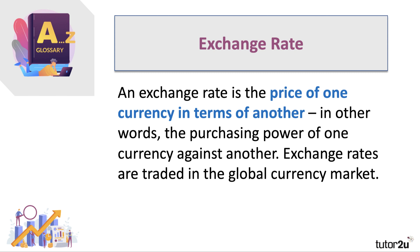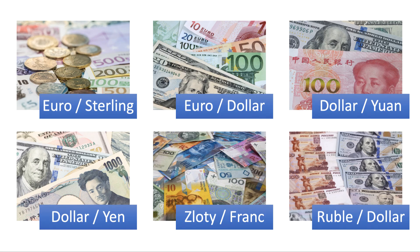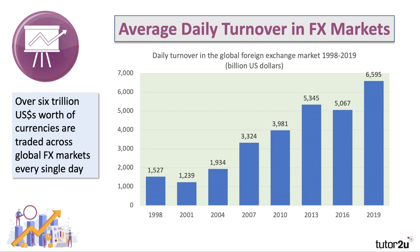The exchange rate is simply the price of one currency measured in terms of another — how much of another currency an exchange rate will buy. In other words, it's the purchasing power of one currency against another. Currencies are traded in the global market, from euro-sterling to euro-dollar to dollar-yen, and so on. These are bilateral exchanges, the value of one currency against another.